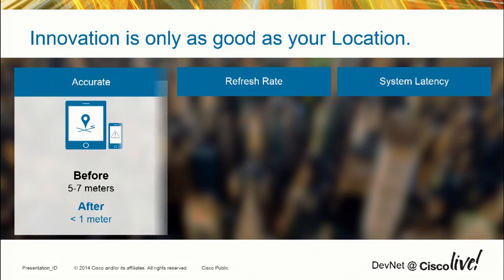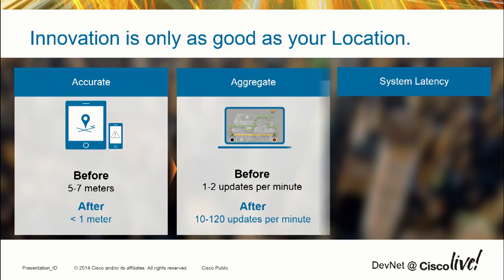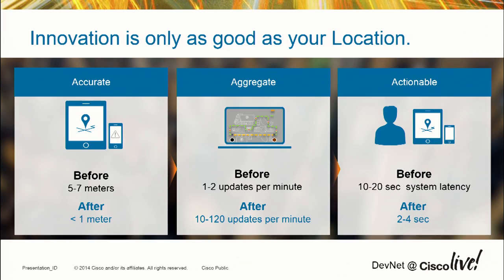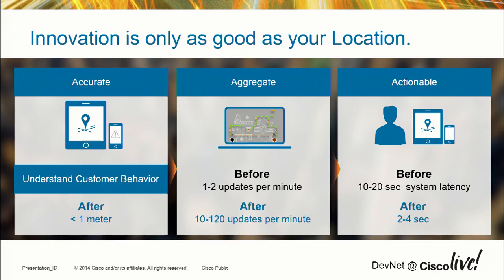What does that mean? Before, we had five to seven meters accuracy; now we're looking at sub-meter. Before, one to two updates per minute — sometimes the client would have a very big lag. Now we're talking 10 to 120 updates per minute. Before, the latency was 10 to 20 seconds; now we're talking two to four seconds. This basically enables us to gain more insight and improve the customer experience.